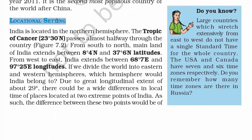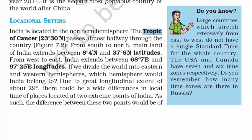Now let's talk about locational setting — where is India located, and how do we recognize India on the globe as a whole? India is located in the northern hemisphere, that is above the equator. The Tropic of Cancer is at 23.5 degrees north — north because it is above the equator. Just remember that the Tropic of Cancer passes through India, from Gujarat to Kolkata. That is 23.5 degrees north.